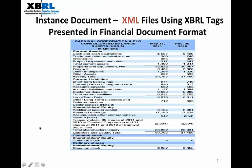First, let's look at the instance document. What you're looking at is the Carnival Corporation's Consolidated Balance Sheet — the standard format you're accustomed to in paper financial statements. The actual source of this information is an XML file using XBRL tags. Each balance sheet account and its amount has a corresponding XBRL tag represented in that XML file, which can then be used to render the balance sheet in this form.